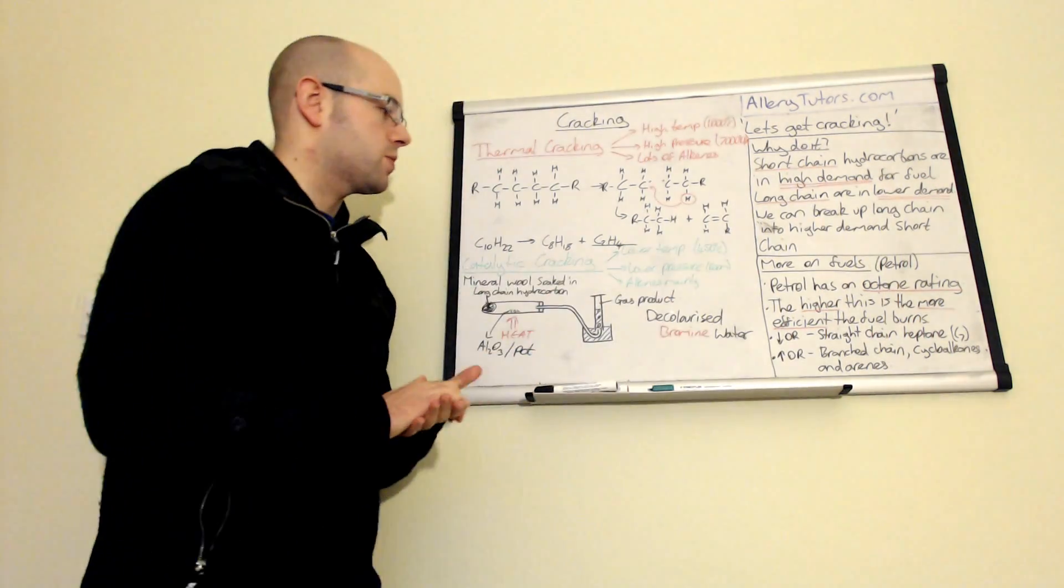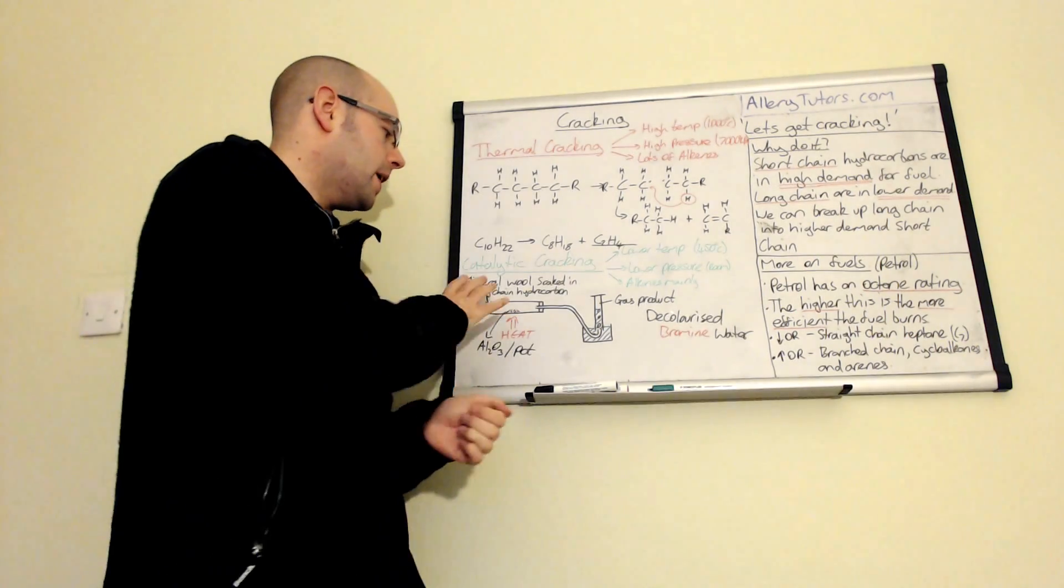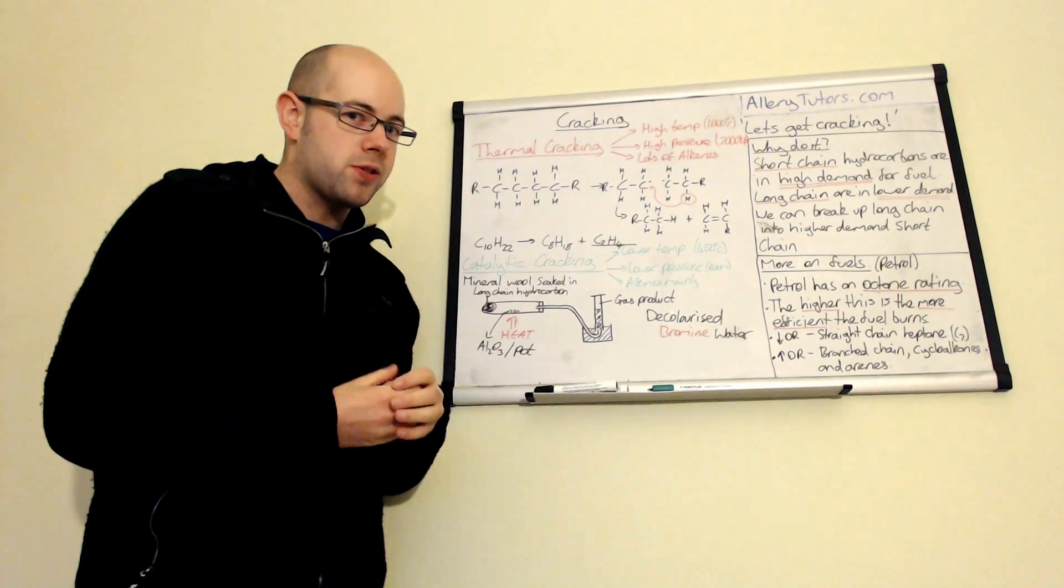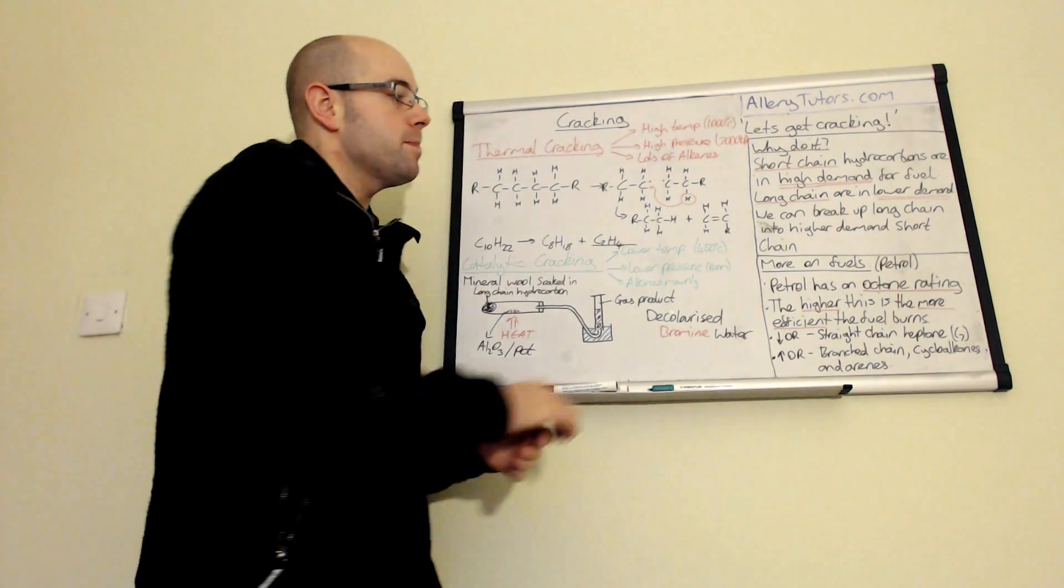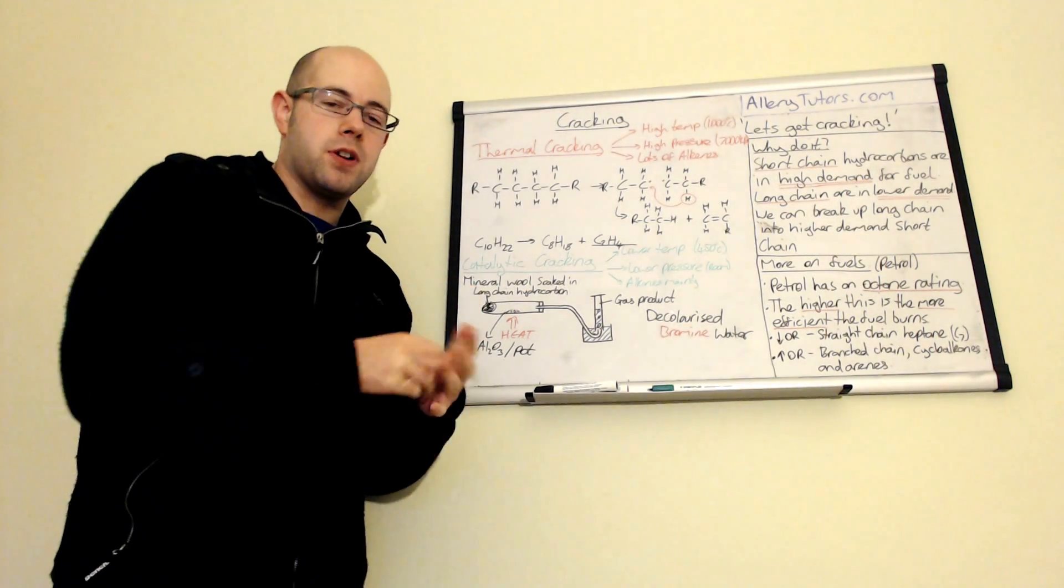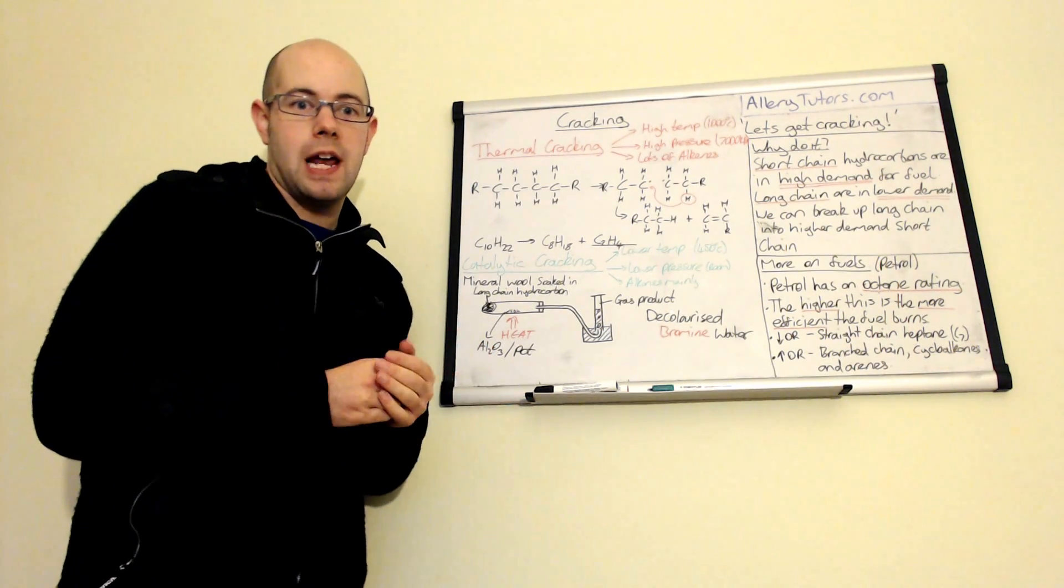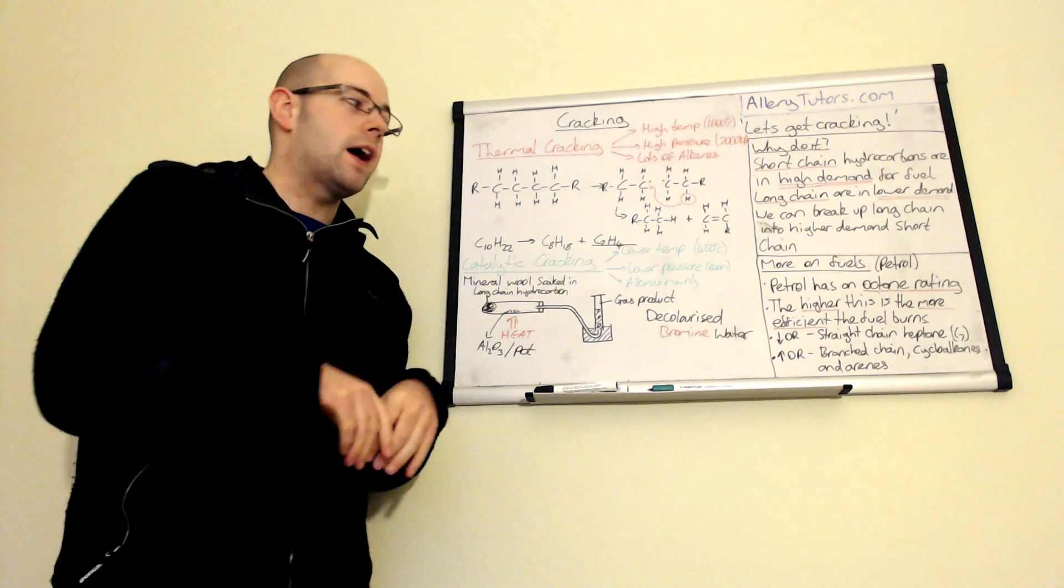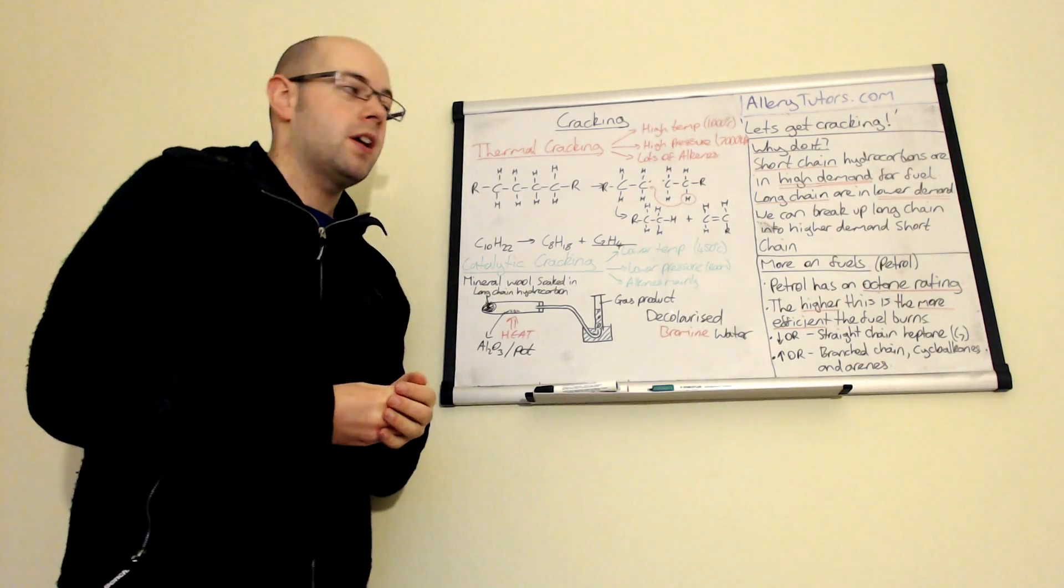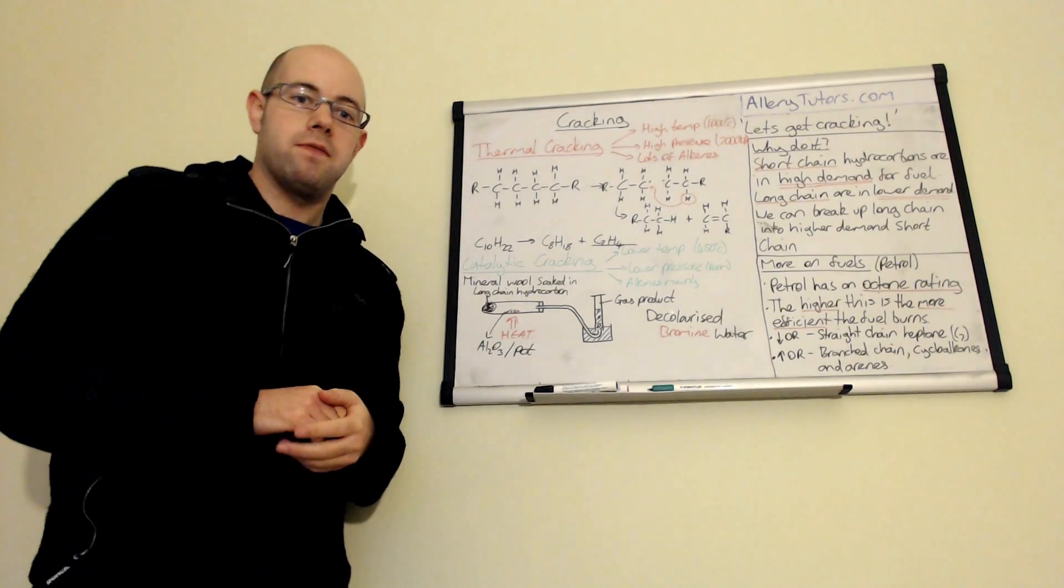Catalytic cracking normally produces branched alkanes. Branched alkanes are very useful for fuels. Petrol actually has an octane rating at the pump. You might see a number like 97 or 98 at the petrol station, which shows the octane rating. Basically the higher the octane rating, the more efficient the fuel burns.